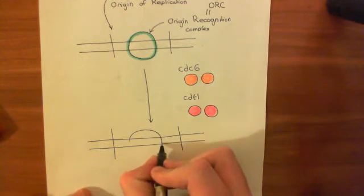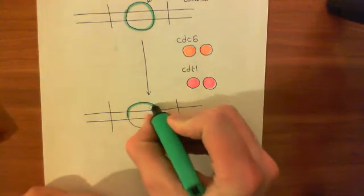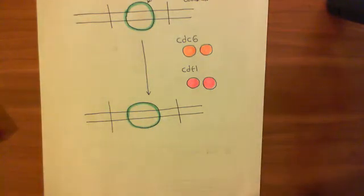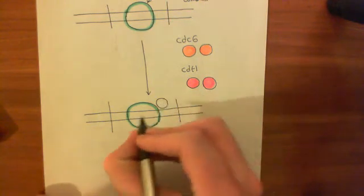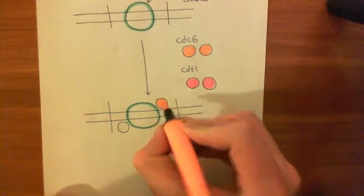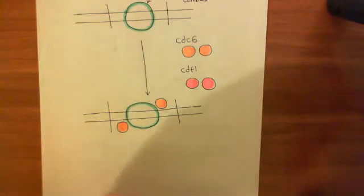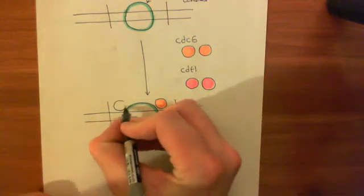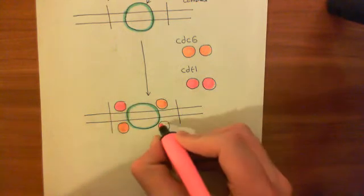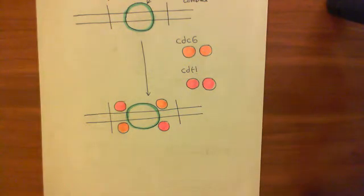So here's how these associate with the origin of replication. We've already got the origin recognition complex, or ORC, bound to our origin of replication - and remember, this is happening to all origins, not just on one chromosome but on every single chromosome. Now two CDC6s bind on, and then two CDT1s bind on, forming a bigger complex. But that's not it yet - there's another protein that needs to come along in order to actually make this a pre-replication complex.